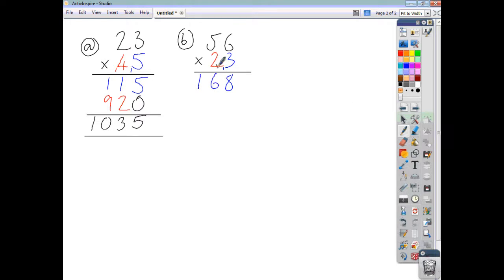Again, because our 2 is in the tens column, we'll write 0 and then we can set about multiplying the 56 by the 2. 2 sixes are 12, 2 fives are 10, add the 1, 11.